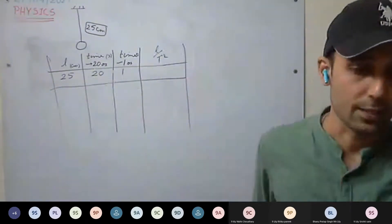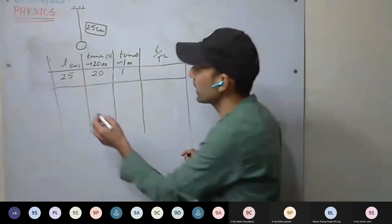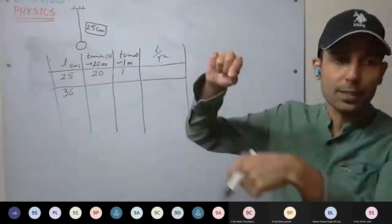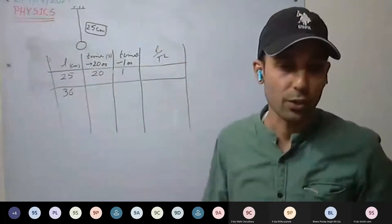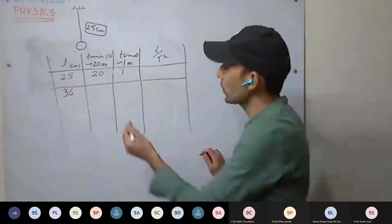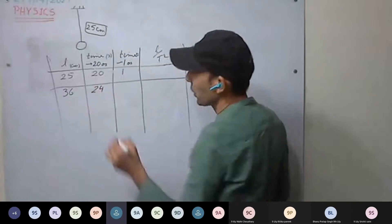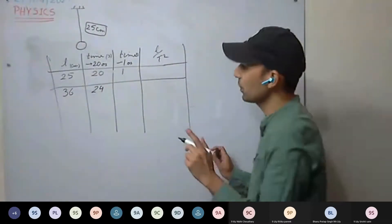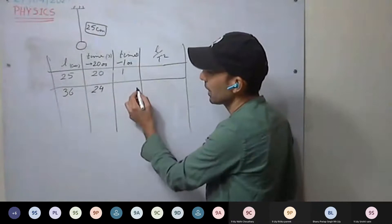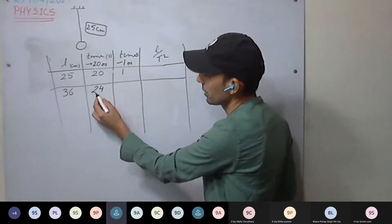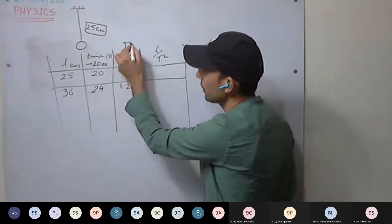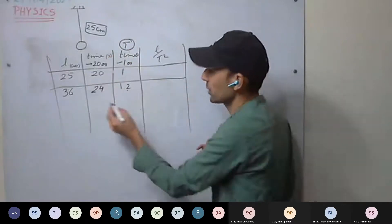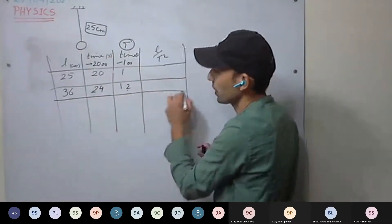Next we increased the length to 36 centimeters. The time taken to complete 20 oscillations came out to be 24 seconds. So the time for one oscillation is 24/20 = 1.2 seconds. This is the time period we are calculating.